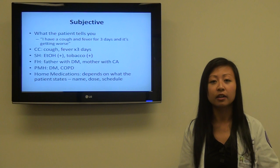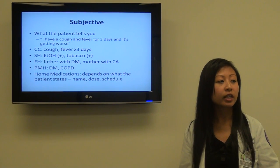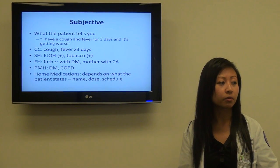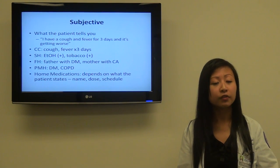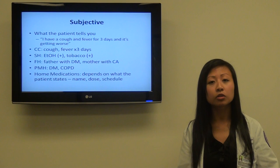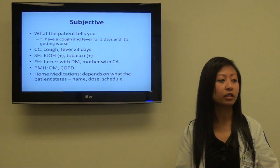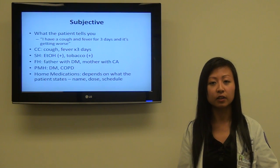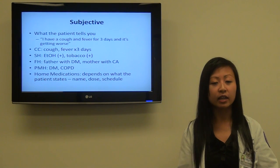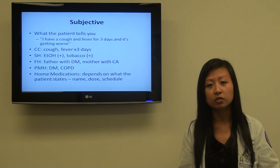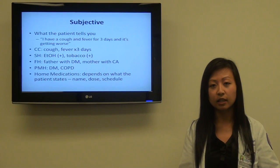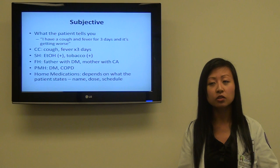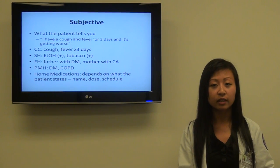Then you go into the subjective part — what the patient tells you. The patient may say: 'I have a cough and fever for three days and it's getting worse.' In your subjective note you would write CC, which is Chief Complaint: cough, fever, times three days. Then ask about social history — do they smoke, do they drink alcohol — and family history, is it pertinent to the patient's current condition, such as a father with diabetes. You can also ask about past medical history; the patient may have diabetes and COPD. Also ask for home medications, recording the name, dose, and scheduling of each medication.